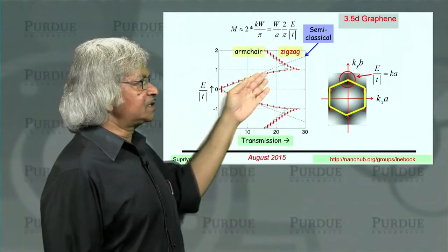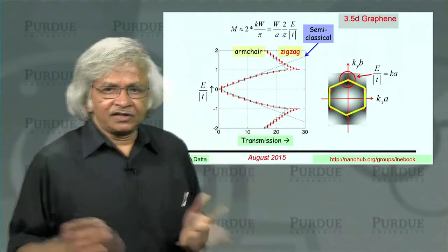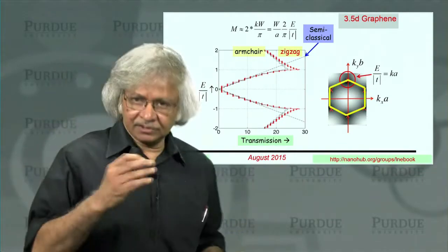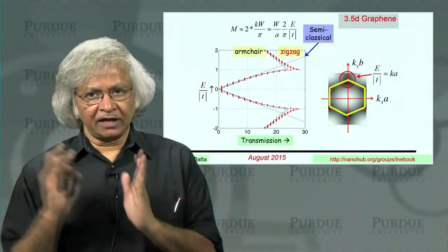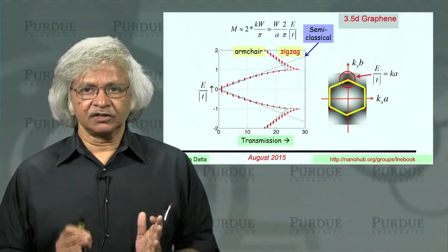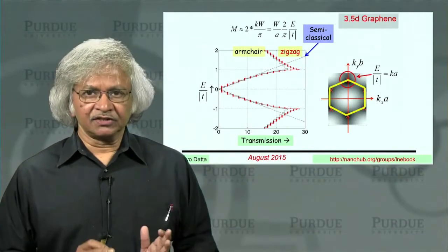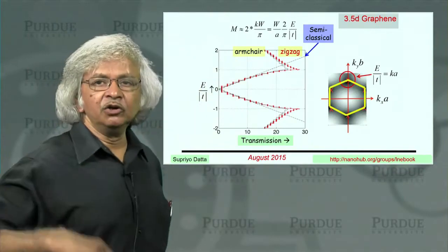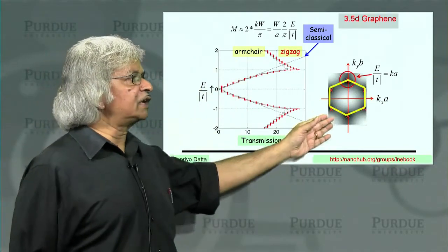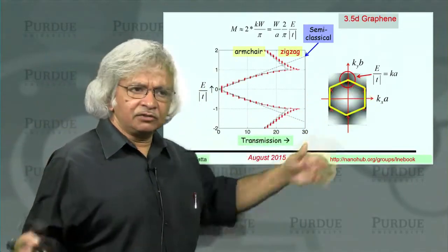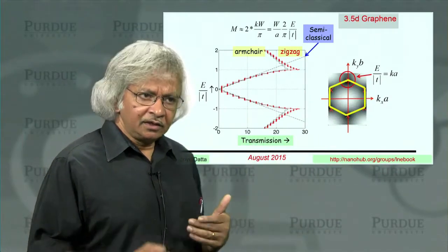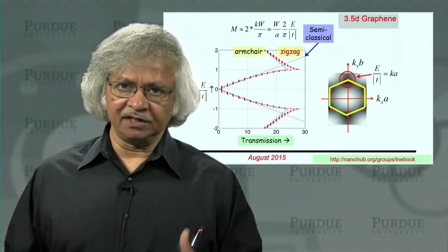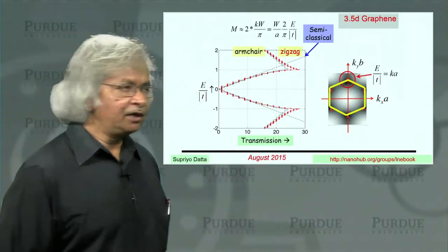But numerically, you see, this plot came without understanding any of that. How did we get it? Well, we just set up graphene, wrote down the alphas and betas, found the surface Green's function, found the sigma, and numerically, that's how we got it. So when you have a new material where you don't understand all this yet, you could still use the numerical method. But then, what you should do is go through all the arguments properly and see if you can understand what you're calculating.